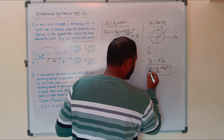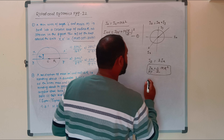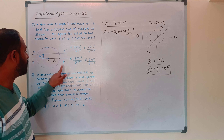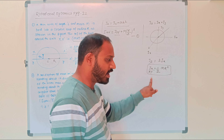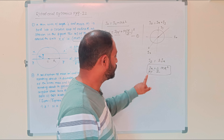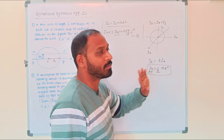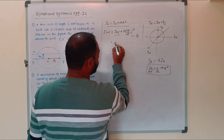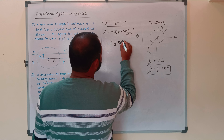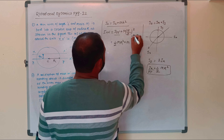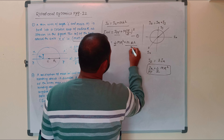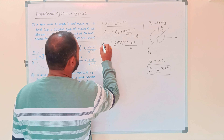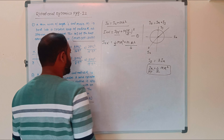Therefore the moment of inertia along YY prime, which equals I_x, becomes (1/2) M R². Substituting into equation one: (1/2) M R² + M (R/2)² = (1/2) M R² + M R²/4 = (3/4) M R².